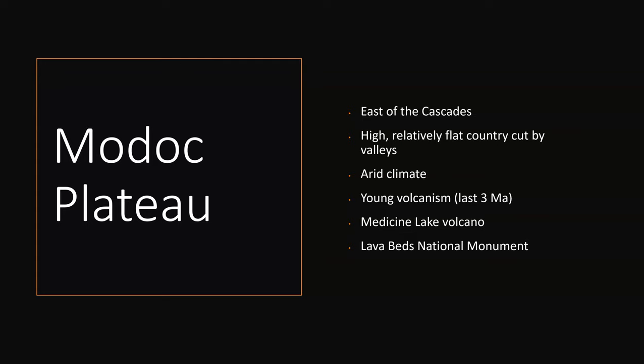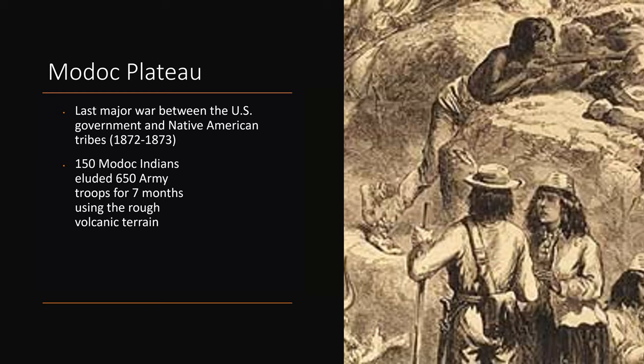The Modoc Plateau is east of the Cascades. It's a high, relatively flat country cut by valleys with an arid climate and very young volcanism — less than three million years old. We see Medicine Lake volcano and Lava Beds National Monument here. The Modoc Plateau had its last major war between Native Americans and the U.S. government between 1872 and 1873, where 150 Modoc Indians eluded 650 army troops for seven months using the rough volcanic terrain to their advantage.